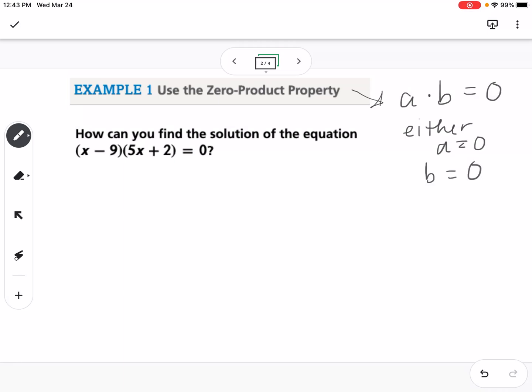We're going to use that idea when we have factors that are being multiplied. What we can do is set each parentheses equal to zero. So I can say x minus 9 equals zero, or 5x plus 2 equals zero, and I can solve each individual equation. I can add 9 to both sides, so I get x equals 9.